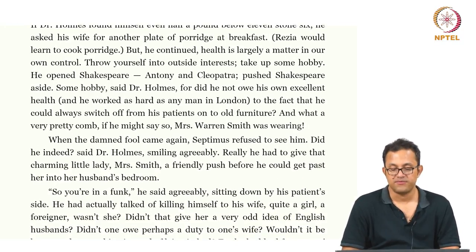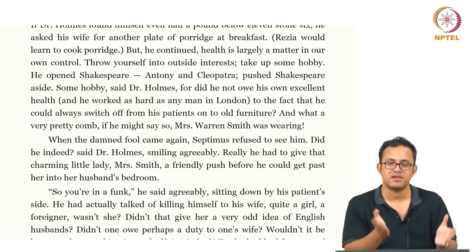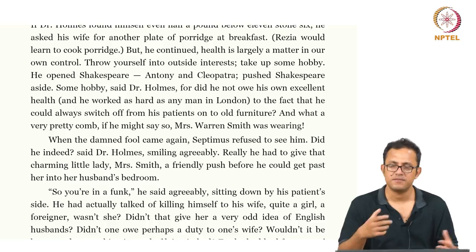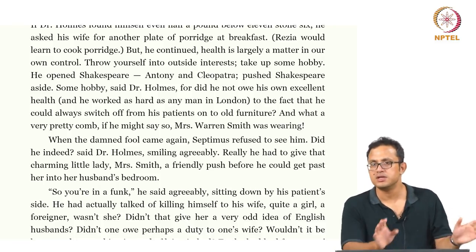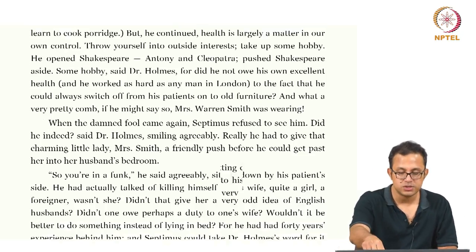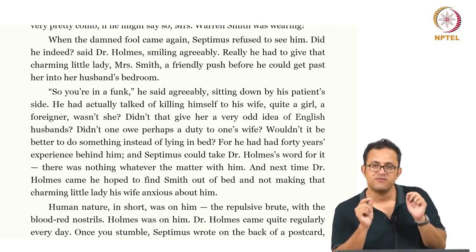When the damned fool came again, Septimus refused to see him. 'Did he indeed?' said Dr. Holmes, smiling agreeably — and gave that charming little lady, Mrs. Smith, a friendly push before getting past into her husband's bedroom. Septimus's refusal to engage with his doctor is very symbolic — a shutting down against this tyrannical masculinist medicine. But that tyrannical masculinist medicine makes its way in by pushing aside Mrs. Smith. This shows the agency-lessness and the lopsided location of agency in this doctor-patient relationship, where the doctor seems to have entire agency and the patient is a passive victim controlled and coerced.